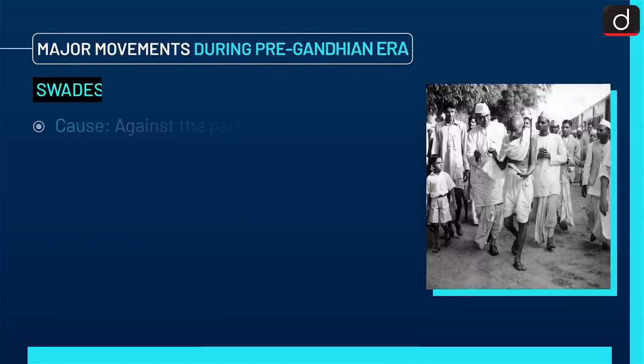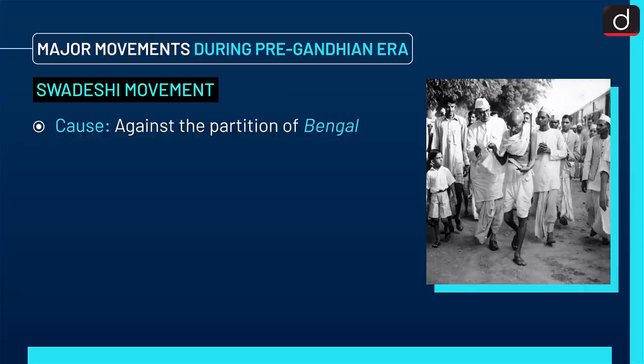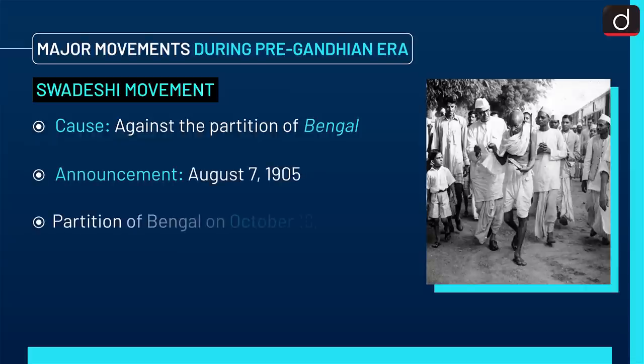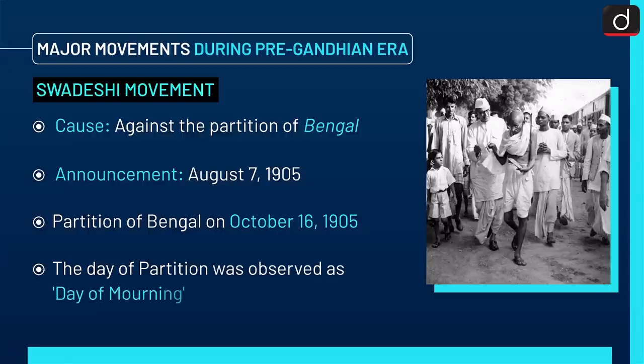First is the Swadeshi Movement. The cause of this movement was against the partition of Bengal. The announcement of this movement was made on August 7, 1905. The partition of Bengal took place on October 16, 1905, and the day of partition was observed as a day of mourning.